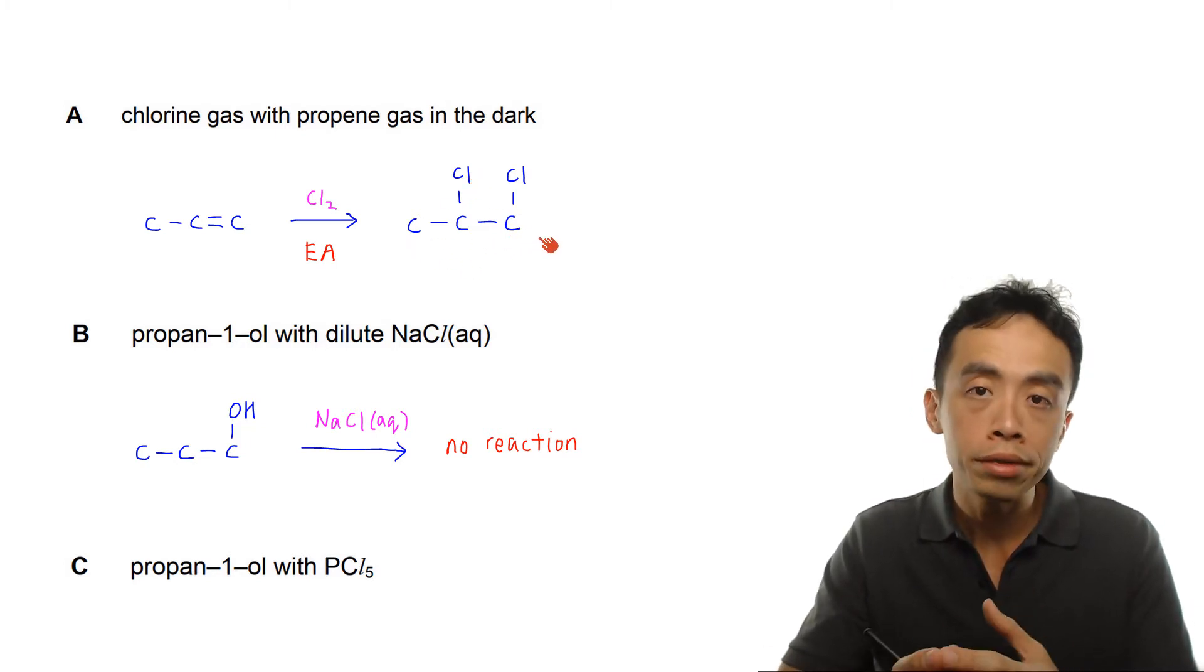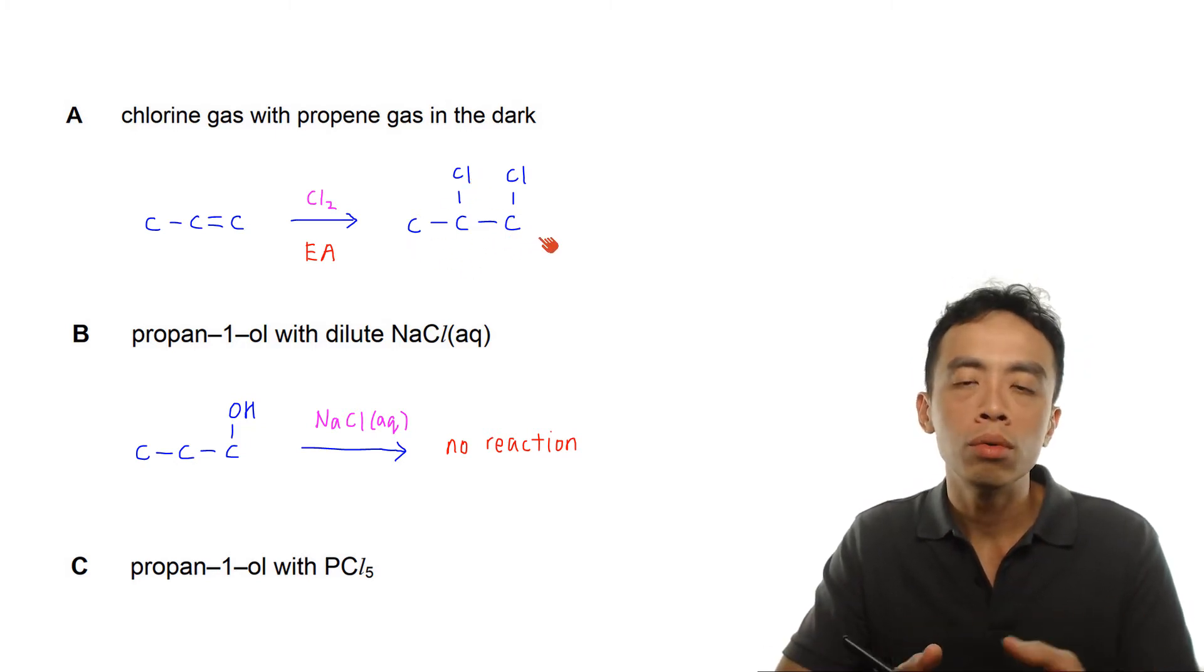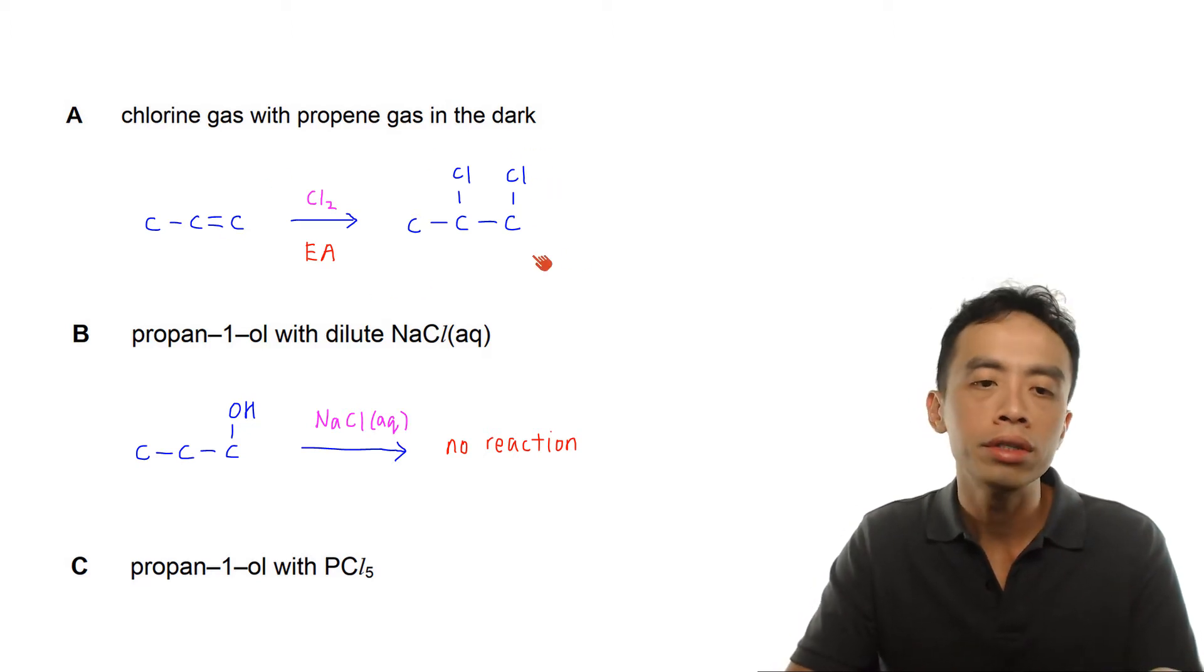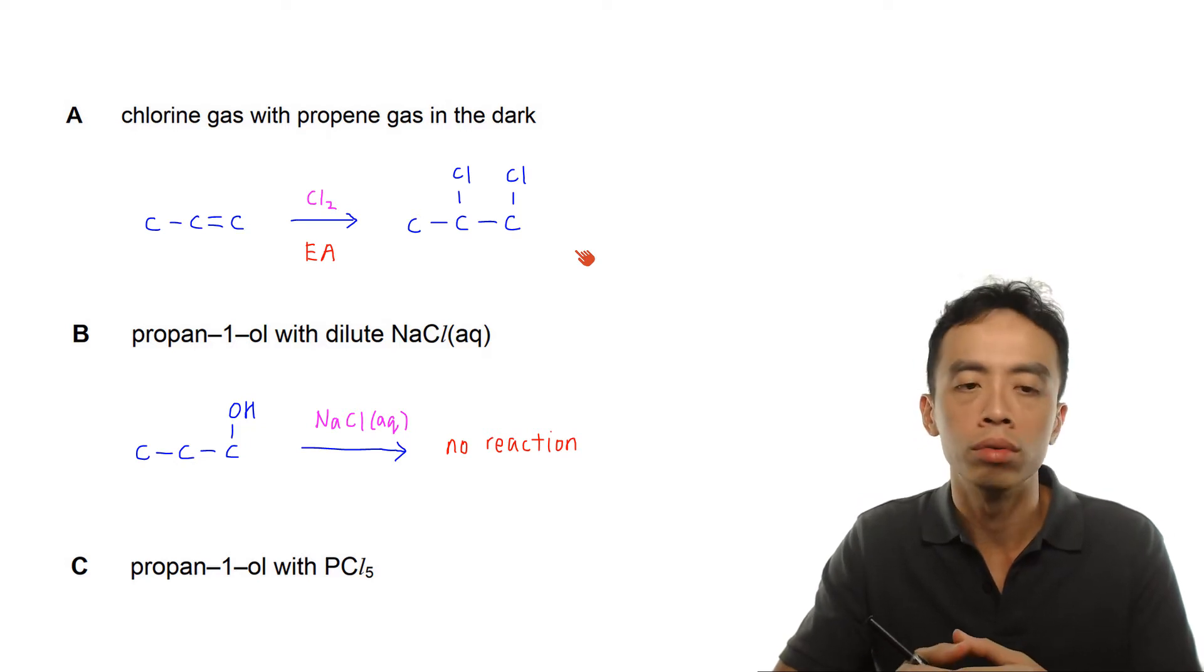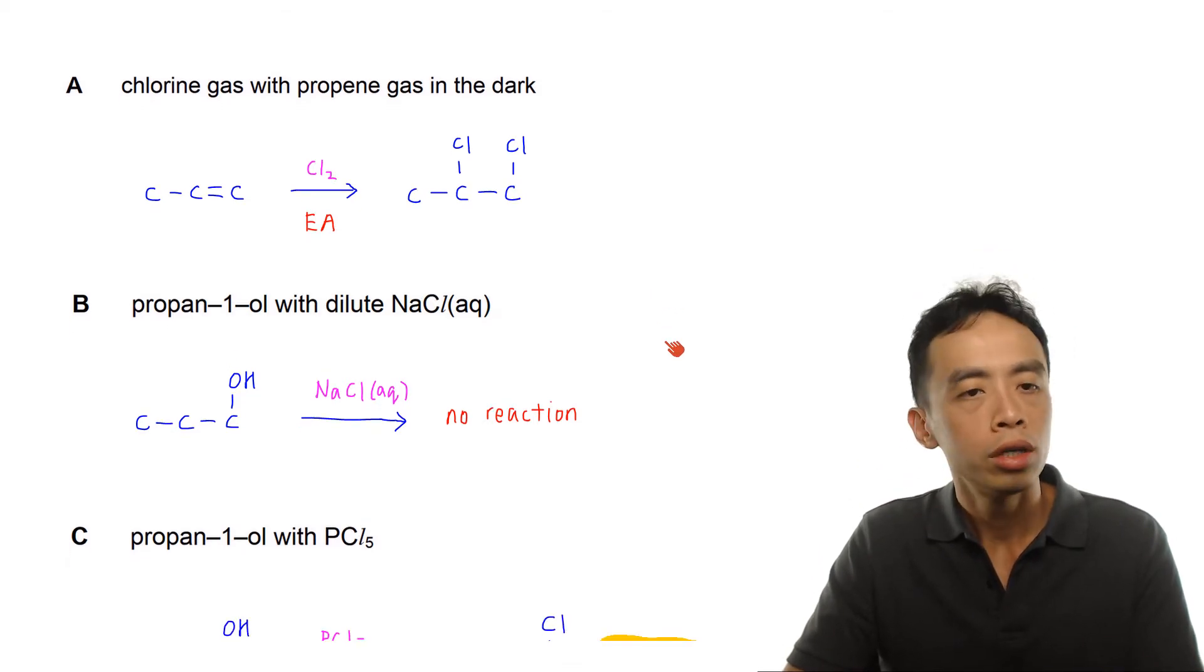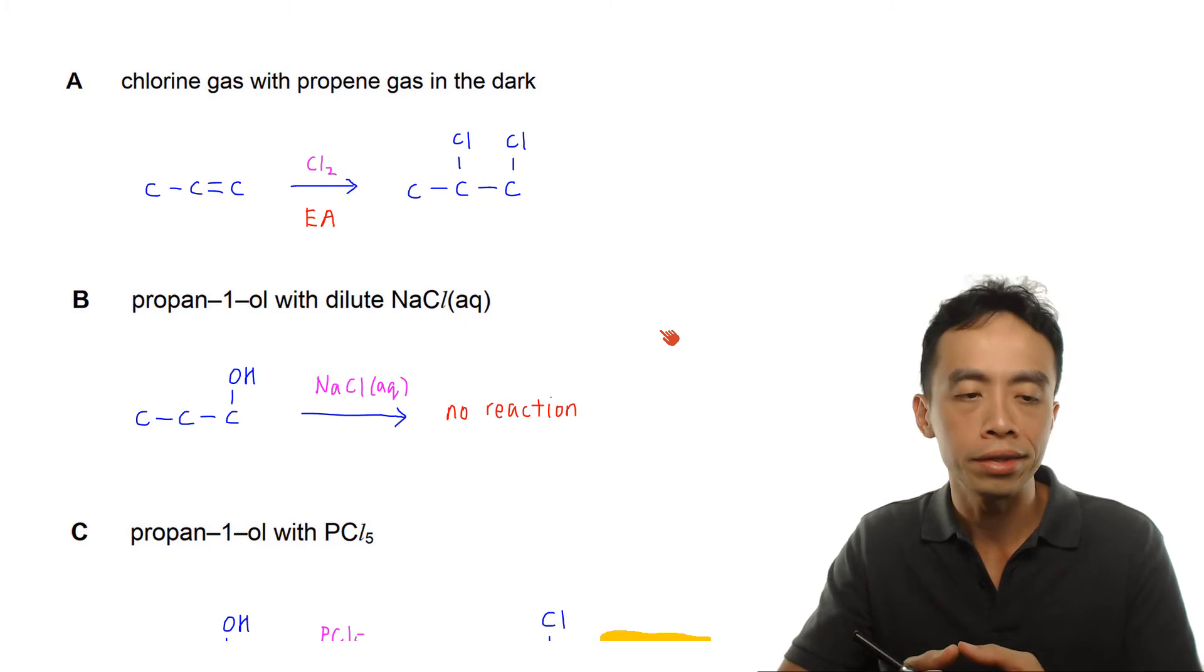But the question wants 1-chloropropane, so we only want to have 1 chlorine on carbon 1. So in this case, this reaction is not that suitable. Now remember this is an electrophilic addition reaction where I add Cl to both carbons of my alkene. So option A is not that a good option.